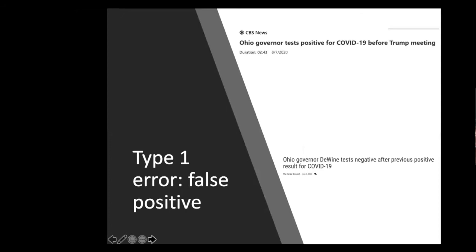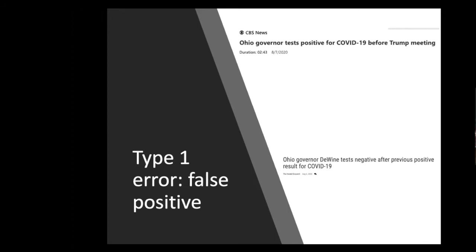Other types of problems: the so-called type one and type two errors. A type one error is a false positive. We saw this not very long ago — the Ohio governor was tested for COVID before Trump came to visit, tested positive, had another test a little bit later and tested negative. Why? Because the test isn't infallible. Any study is going to find some people who you think are positive or negative when they're not. This exists in every single field. And the opposite is false negative — there's one test that 20% of the time gives you the wrong answer.